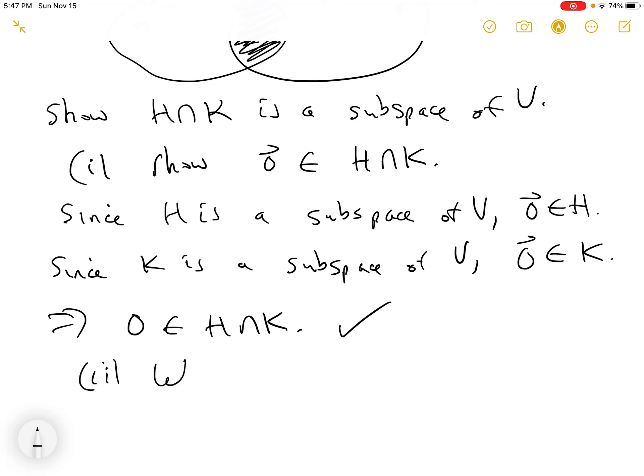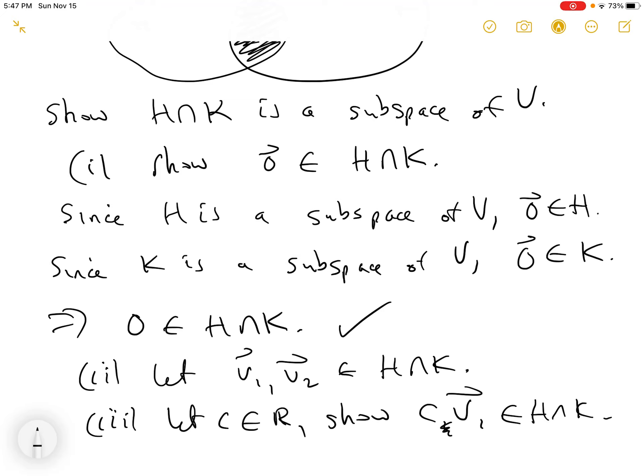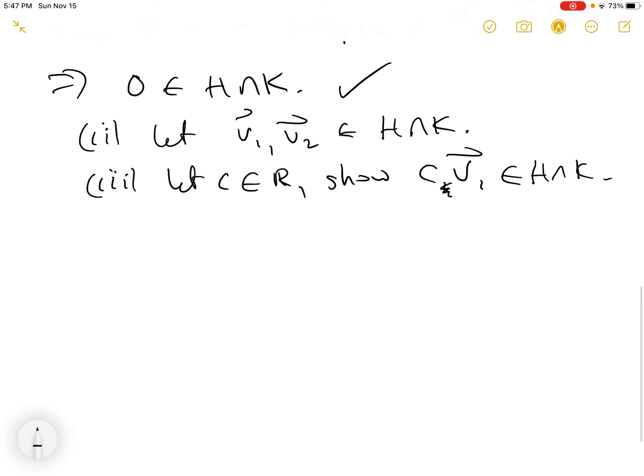Now you do part two. So let V1 and V2 be elements of H intersect K and show that V1 plus V2 is in H intersect K. And then part three is let C be some real number and show that C V1 is an element of H intersect K when V1 is an element of H intersect K. Great problem.